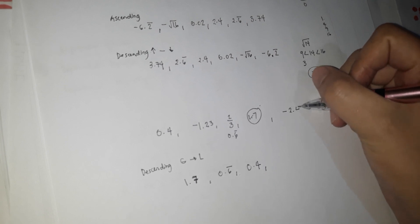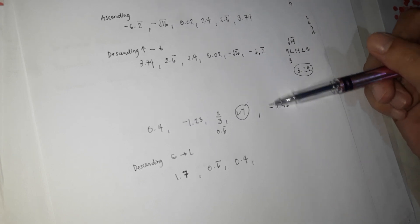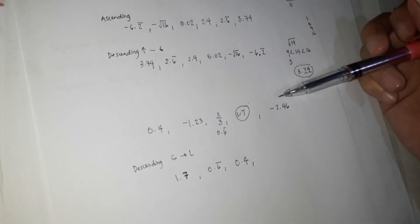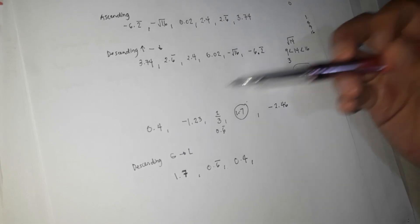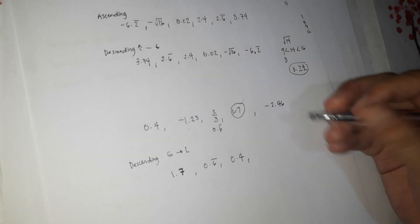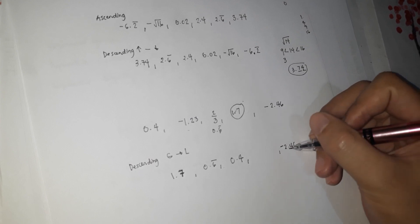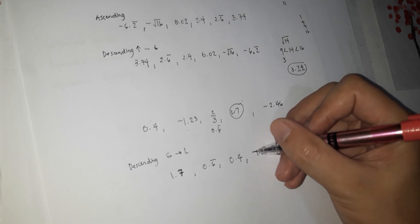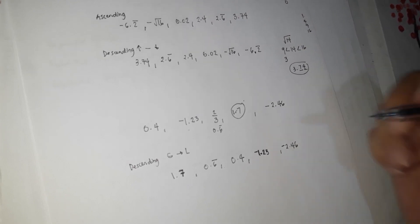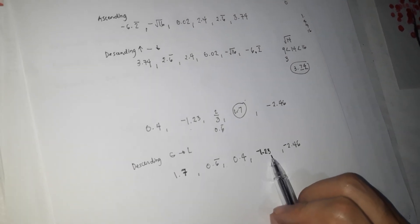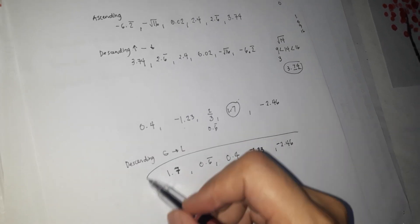For negative numbers, the one with the larger absolute value is actually the smaller number. For example, if we had negative 2.46 and negative 1.23, negative 2.46 would be smaller because it is farther from 0. The farther a negative number is from 0, the smaller it is. So negative 1.23 is our smallest number in this descending arrangement.